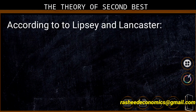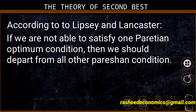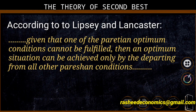According to these economists, if we are not able to satisfy the Pareto optimum conditions, then we should depart from all other Pareto conditions. In their own words: given that one of the Pareto optimum conditions cannot be fulfilled, then an optimum situation can be achieved only by departing from all other Pareto conditions. This means that if we cannot satisfy some Pareto conditions, we need not satisfy the other conditions either — we can achieve the best solution by departing from all other Pareto conditions.